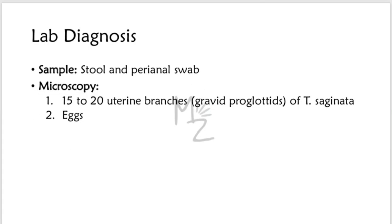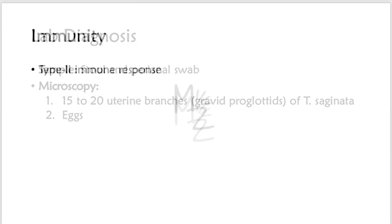Lab diagnosis: we need samples like stool and a perianal swab. Identification of Taenia saginata consists of finding gravid proglottids with 15 to 20 uterine branches in the stool, examined under the microscope. Eggs are found in the stool less often than proglottids.